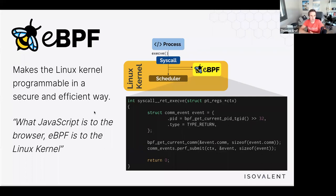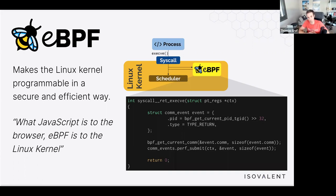eBPF in one minute — what is eBPF? It's what's driving Cilium underneath. You don't really need to understand it to use Cilium, but it's the enabler for what makes Cilium unique. eBPF is essentially a programmable engine at the operating system level, originally written for the Linux kernel, and now also ported to Windows. In a nutshell, eBPF is quite similar to what JavaScript is to a browser — it makes the Linux kernel programmable. We can run programs when certain events happen, such as when processing network packets, when a system call occurs, or when trace points are invoked.